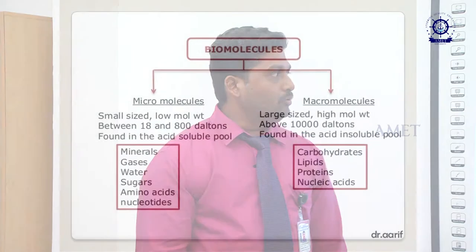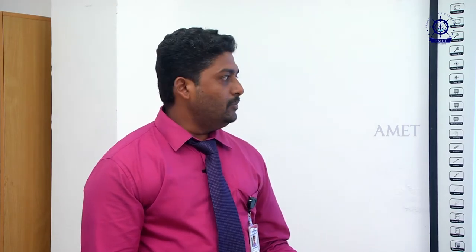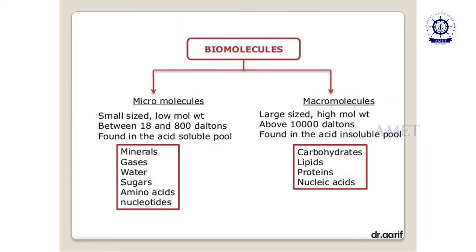These biomolecules are generally classified into two types: micromolecules and macromolecules. Macromolecules are helpful for most of our day-to-day activities such as metabolic processes. Micromolecules are very small in size, with low molecular weight between 18 to 800 daltons, found in the acid soluble pool. Examples are minerals, gases, water, sugars, amino acids and nucleotides. Macromolecules are large in size and high molecular weight, above 10,000 daltons, found in the acid insoluble pool. Examples are carbohydrates, proteins, lipids and nucleic acids.